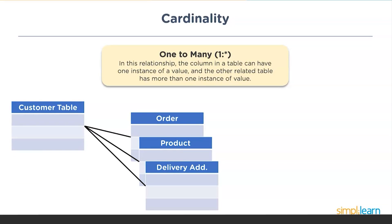One-to-many, as I said, is the reverse of many-to-one. In the customer table, only one customer record exists per customer, and one customer can place many orders for multiple products and can also have multiple delivery addresses. This is a typical one-to-many relationship — we will see this example in our sample data set.